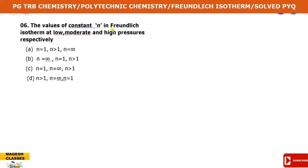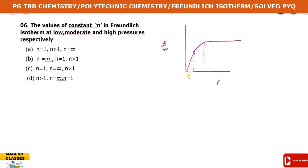Question number 6: The values of constant n in the Freundlich isotherm at low, moderate, and high pressure respectively. Graphical representation of Freundlich adsorption isotherm shows x by m on the y-axis and pressure on the x-axis. As pressure increases, the x by m value increases sharply at first, then slowly, then becomes constant. At low pressure, x by m increases sharply. At moderate pressure, the increase is slow. At high pressure, adsorption is constant.